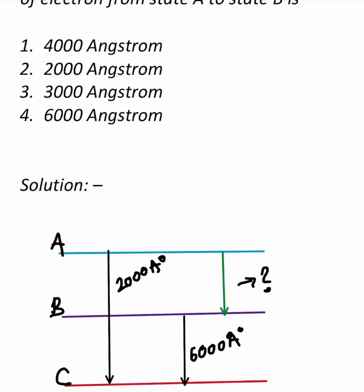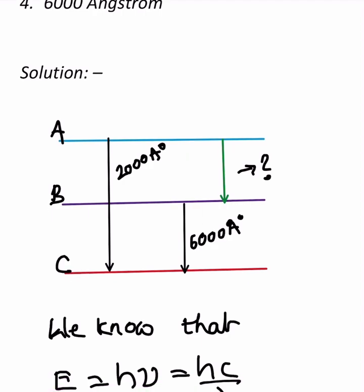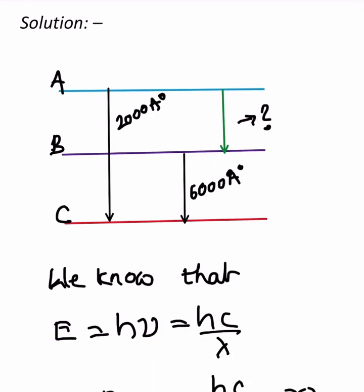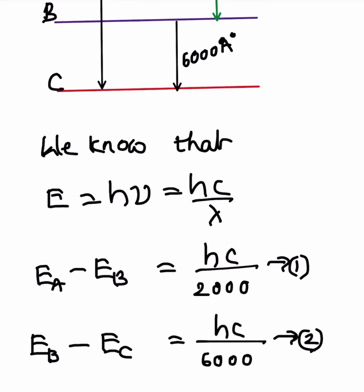As shown in the diagram I've drawn, the transition A to C corresponds to 2000 angstroms, and B to C corresponds to 6000 angstroms. We are asked to find the wavelength for A to B. We know that energy E equals h·ν.